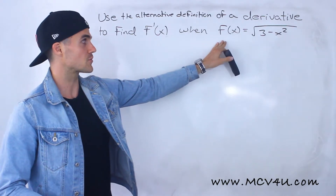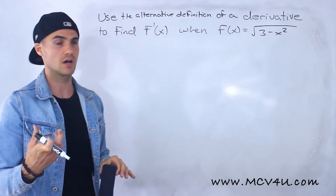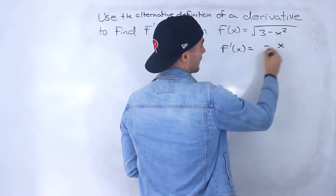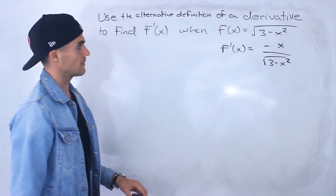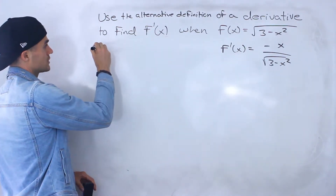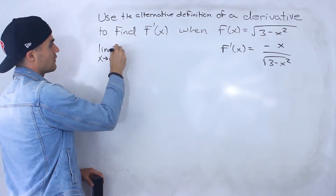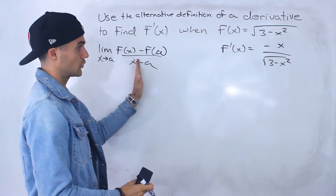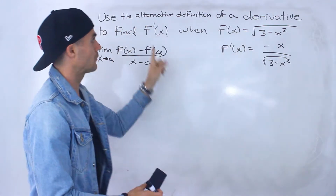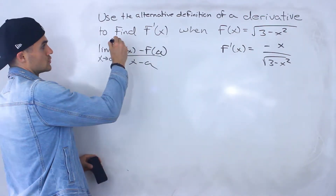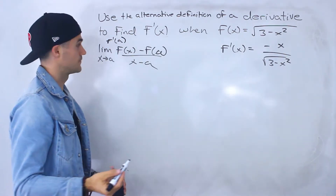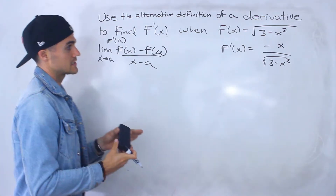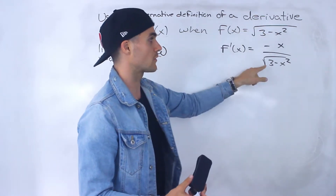Now if you remember, we already found the derivative of this using the original, most popular definition of a derivative, and in that video we got the derivative to be negative x over the square root of 3 minus x squared. What we have to do now is use the alternative definition — the limit as x approaches a of f of x minus f of a, all over x minus a. When using the alternative definition, our derivative will be in terms of a, so we'd end up with negative a over the square root of 3 minus a squared.